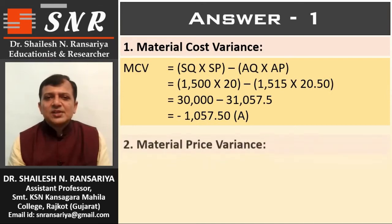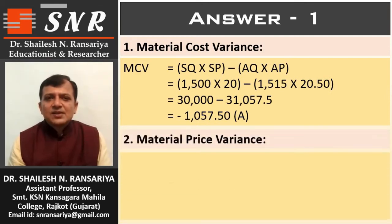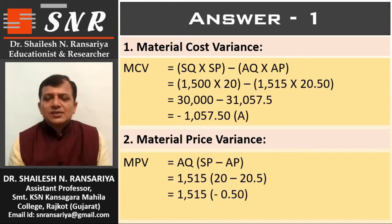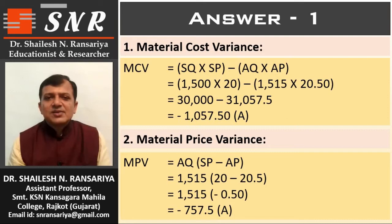Number 2: Material price variance. The formula is AQ × (SP minus AP). So, actual quantity 1515 × (SP 20 minus AP 20.5). So, 1515 × minus 0.5. The variance is minus 757.5, which is known as adverse variance.